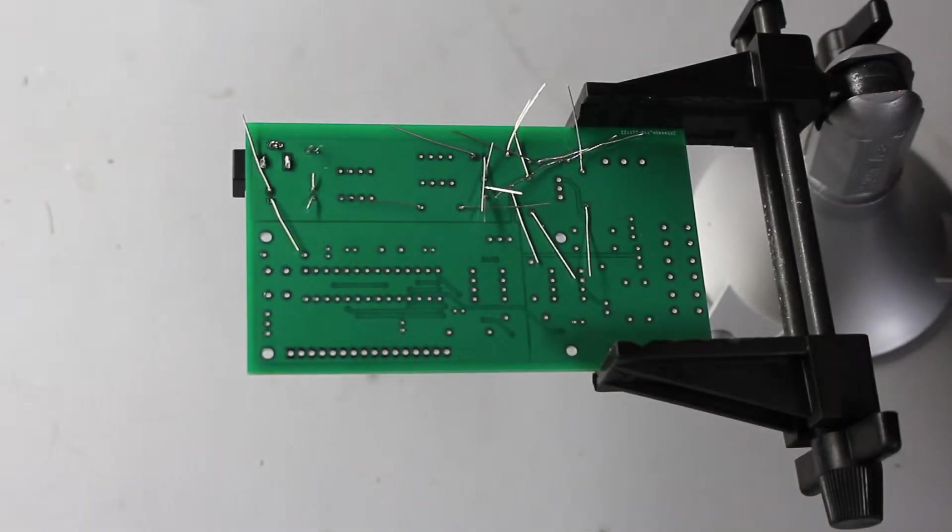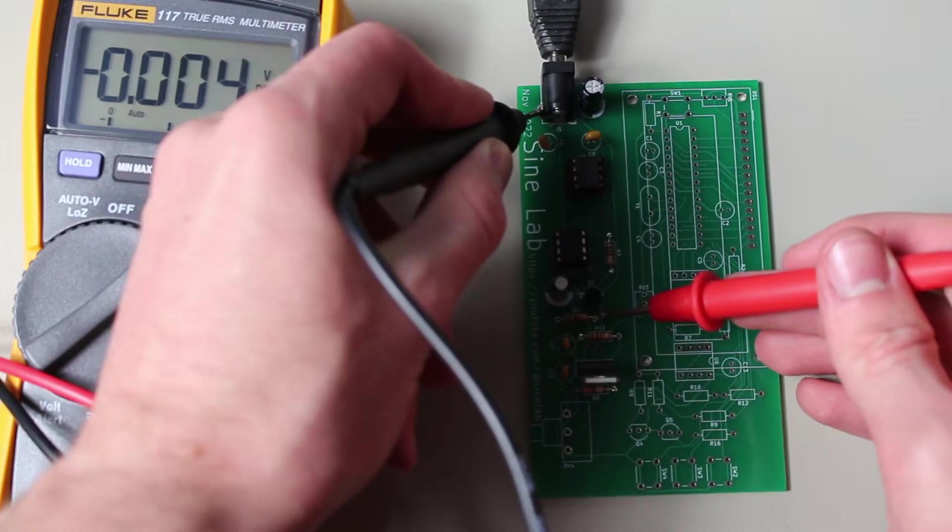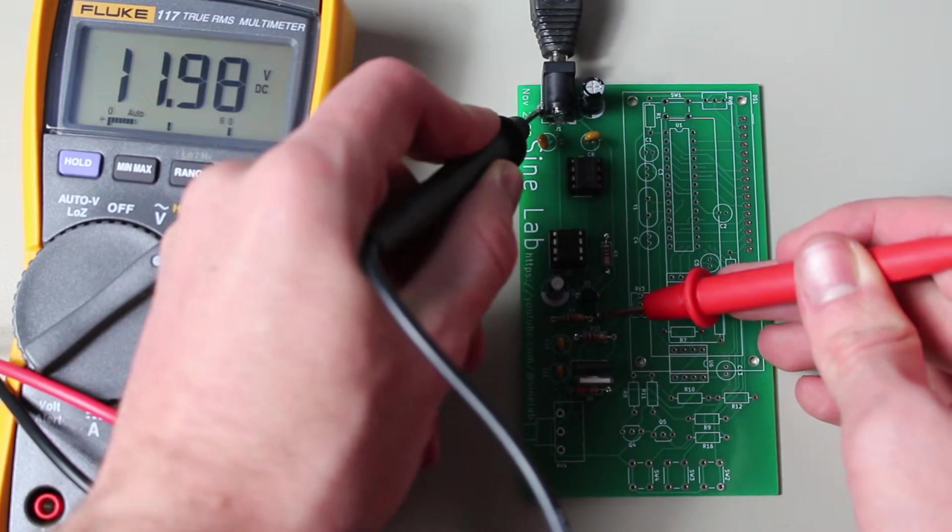Anyways, it was time to solder them together. I started with the power supply portion, since I didn't want to accidentally fry anything if the supply voltages were wrong. Once I verified that they were working properly, it was time to solder together the rest of the board.